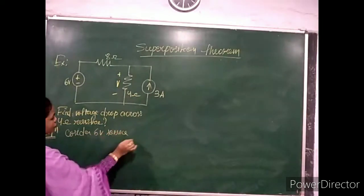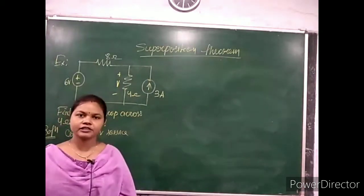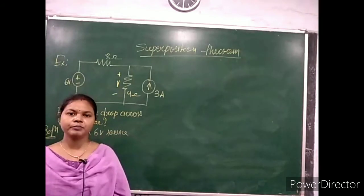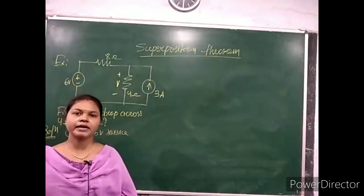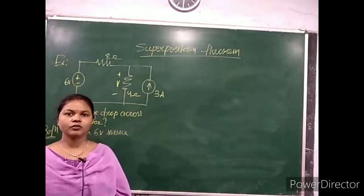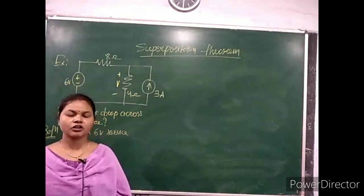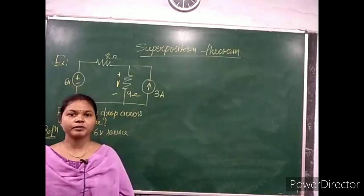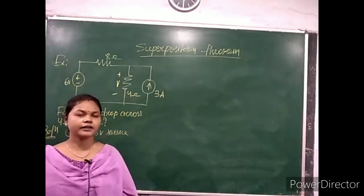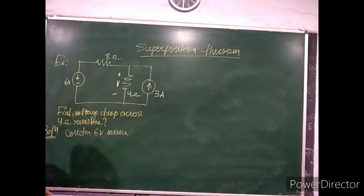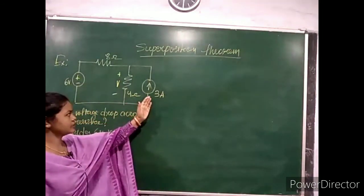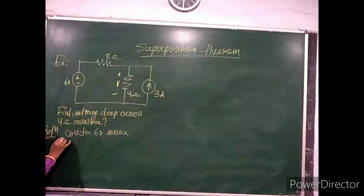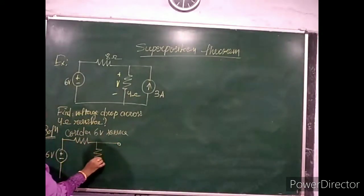In the first step, we consider the 6-volt source and neglect the 3-ampere current source. As you learned in first-year basic electrical, current source is made zero by open-circuiting the path where the current source was originally placed. So we open-circuit that path, and the simplified circuit diagram for step one has only the 6-volt source active.